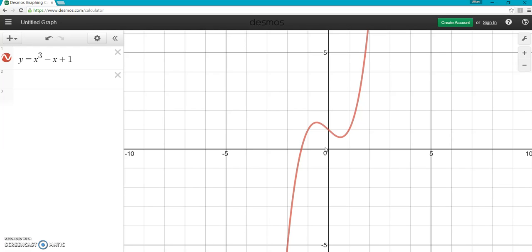Desmos is very easy. Once you see the x-intercept on your screen, all you have to do is click on it. Sometimes you have to click twice. Now we have our answer: x = -1.325. That's when y = 0.